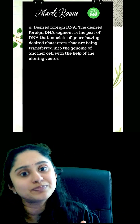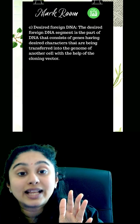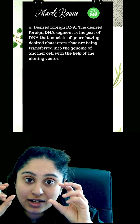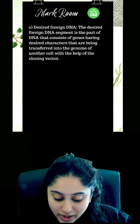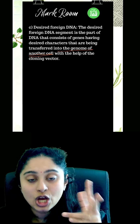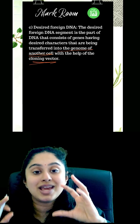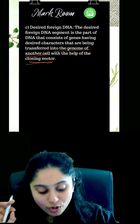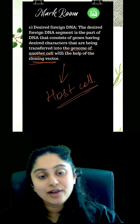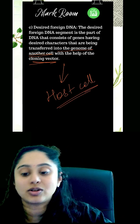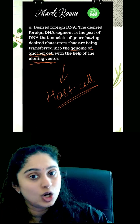Once the vector is ready, you need to deliver it into the next organism. For that, you need the foreign gene you are looking for. You will isolate it from whatever genome of another cell you are taking, cut it, attach it with the cloning vector, and make the foreign DNA ready. This foreign DNA will then be transferred to a suitable host cell, where the host will start expressing the desired gene.